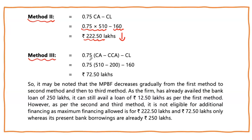Method 3 is even more stringent. It considers only 75% of current assets minus core current assets, compared with current liabilities. Current assets are 510, core current assets are 200 as given, so 510 minus 200 equals 310. Only 310 can be considered for funding, and 75% of that gives 232.50. Comparing with other current liabilities of 160, the eligible bank finance is just 72.50 lakhs.